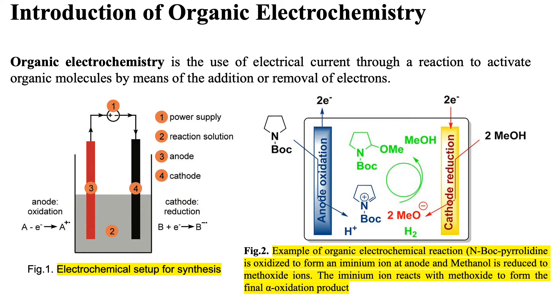Organic reactions are performed in electrochemical cells. Electrochemical cells have different parts like a power supply, reaction solution, anode, and cathode.